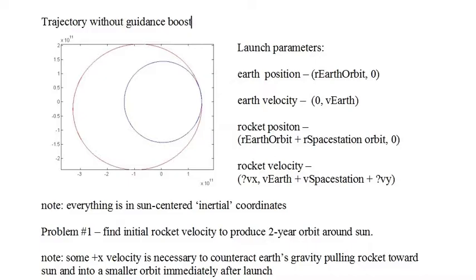The rocket will also be launched from the X axis with the initial position: the X position is the radius of the Earth orbit plus the radius of the space station orbit, and with an initial velocity calculated as the Earth's orbit velocity plus the space station's orbit velocity plus the launch velocity of the Centaur rocket, which is to be determined.